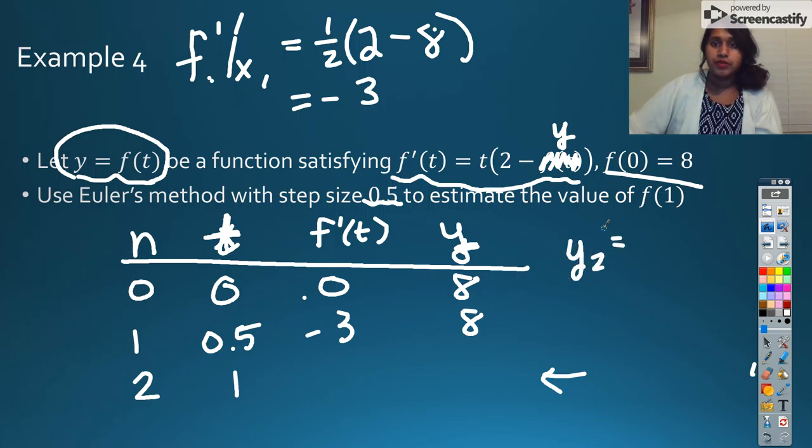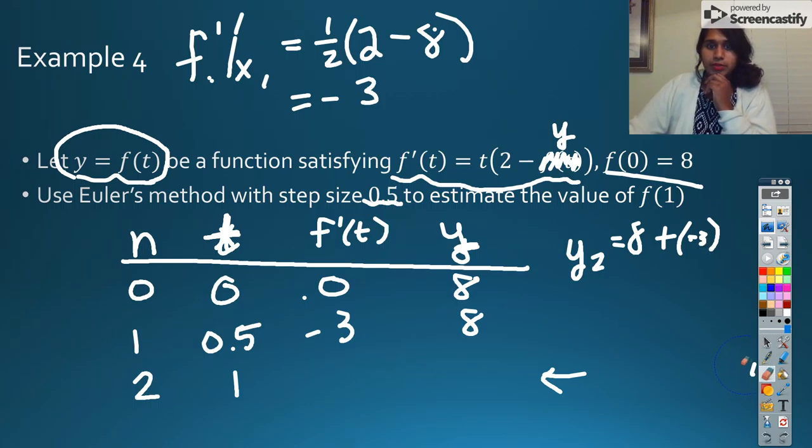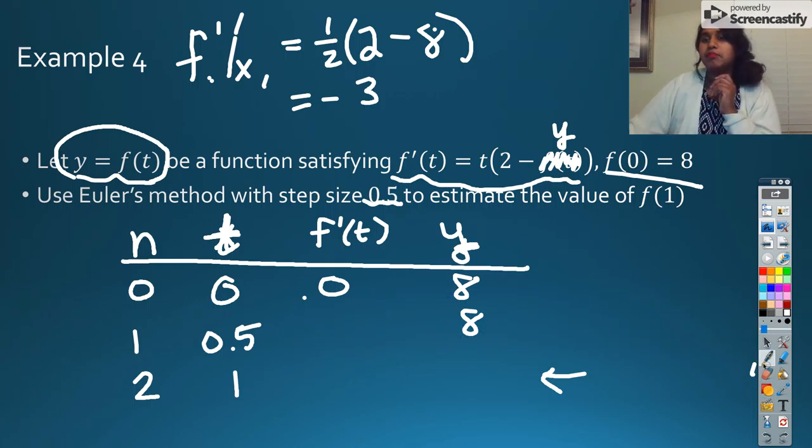y2 is equal to the previous y, 8, plus my slope, negative 3, times my—oh goodness, have I been failing to do my change step this whole time? Yes, I have, or at least that last time. So that's all I did. Okay, so we're only a little bit behind. Not this whole time. My bad.